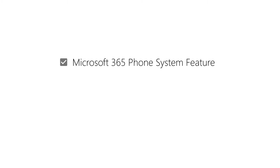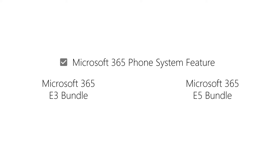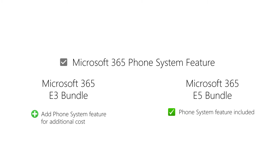First, let's review the Microsoft 365 license bundles to understand access to the phone system feature. Most likely, you are currently subscribed to either the E3 bundle or the E5 bundle. The phone system feature may be added to the E3 bundle for an additional cost. However, the E5 bundle already includes the phone system feature. If you currently have the E3 bundle, upgrading to the E5 bundle may be more advantageous and cost-effective than adding phone system as a standalone feature.